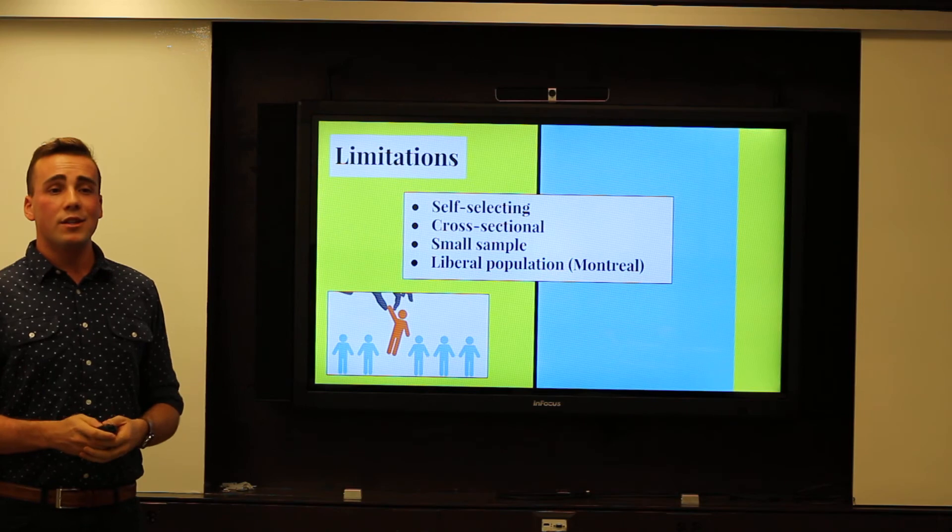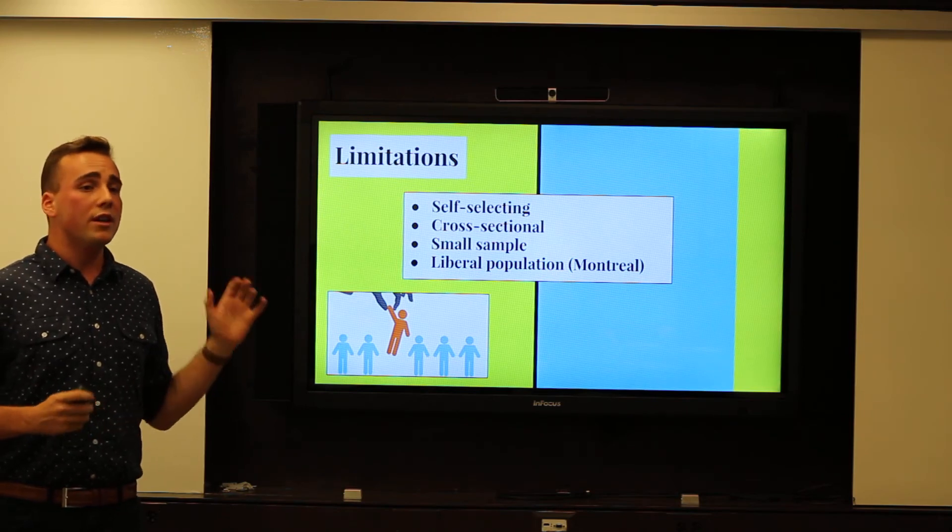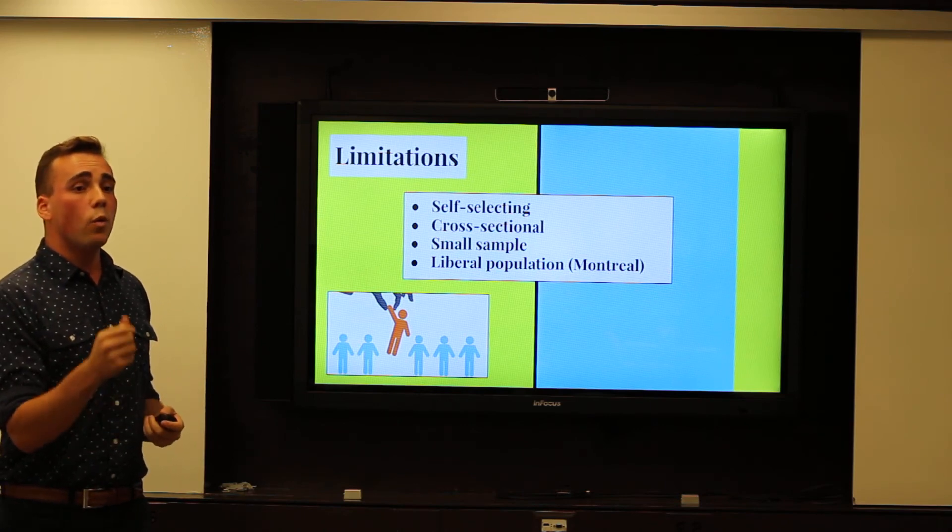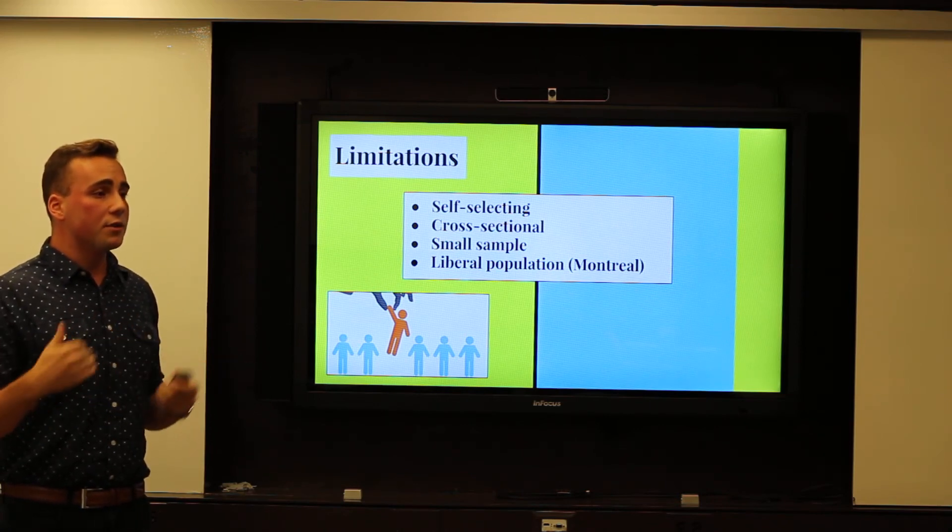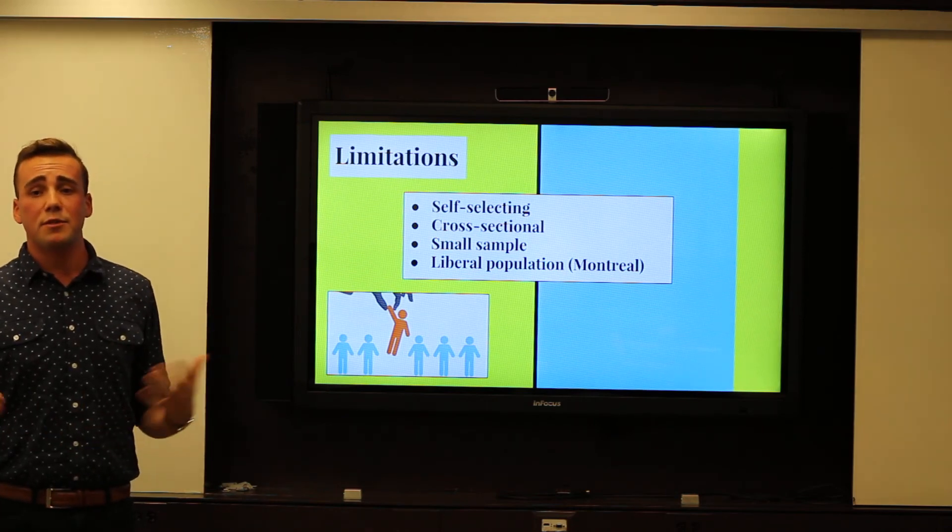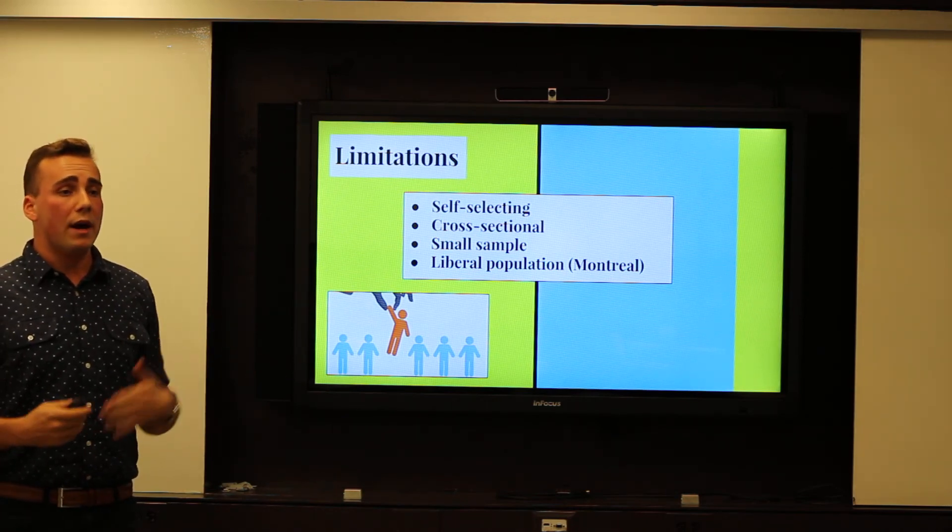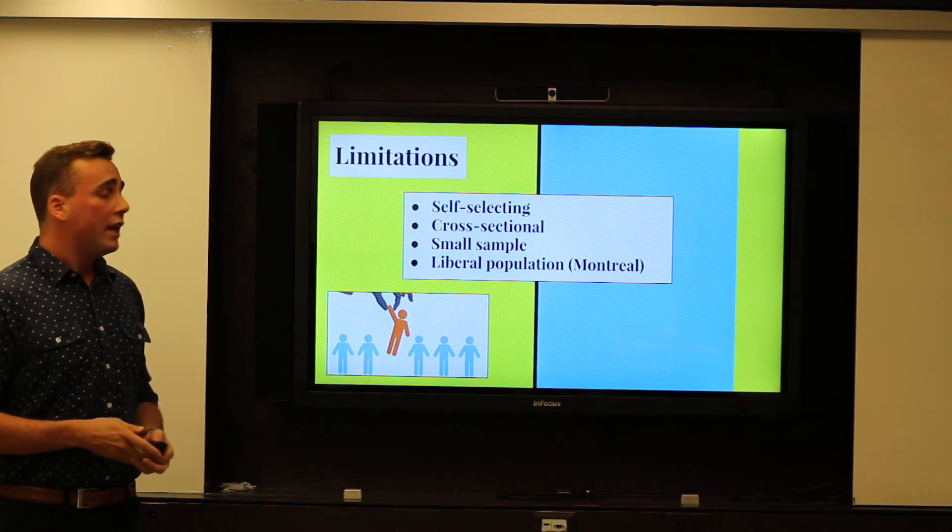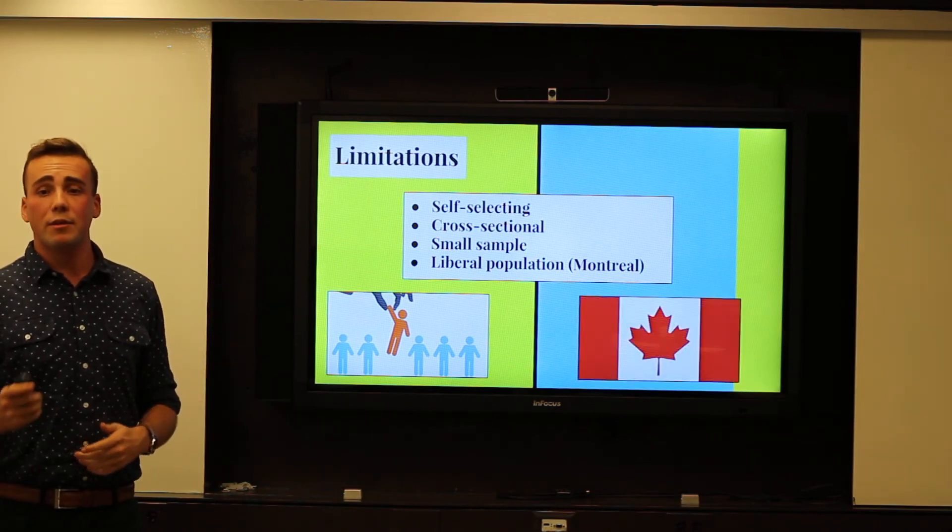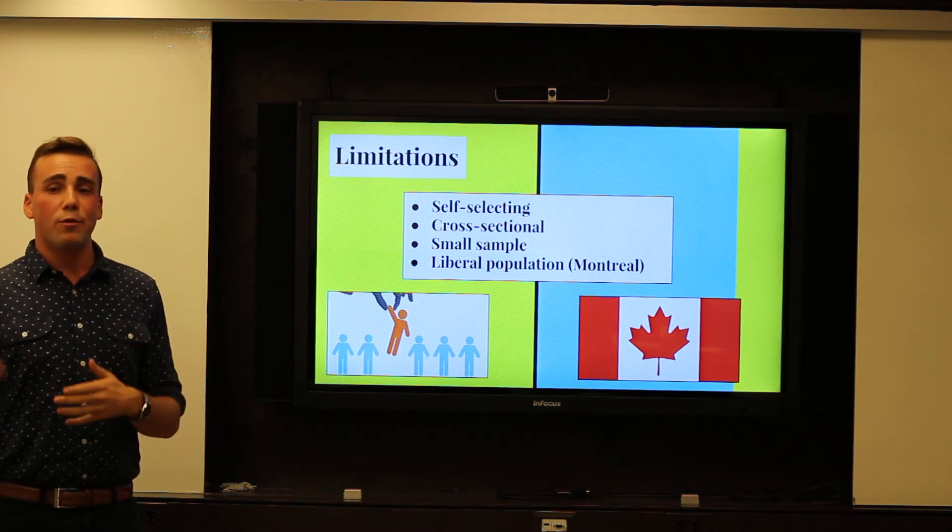Additionally, this study is cross-sectional, so it does not show any before or after effects like longitudinal studies. So they can't specifically pinpoint why queer people actually had different stress responses. Additionally, 87 participants is a fairly small sample size, which would lower the power of this actual study overall. And this was done in Montreal, which is a fairly liberal city, which may skew the results in one way or another.